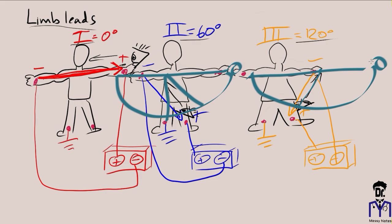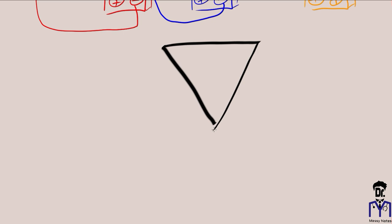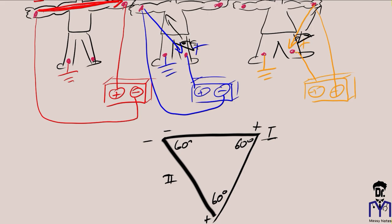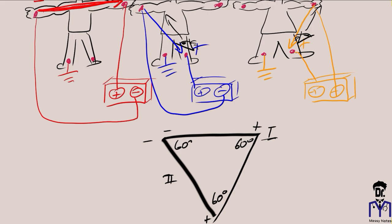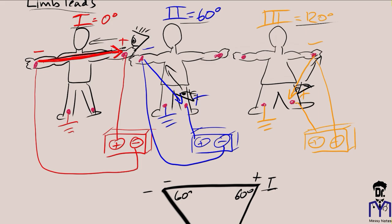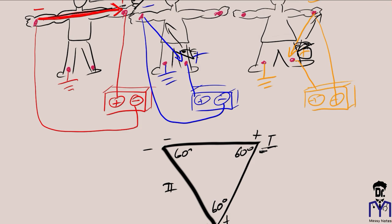If we combine all three leads, we form an equiangular triangle — also known as Einthoven's triangle. Because it's equiangular, each interior angle is 60 degrees. When we move these leads so they intersect through a common point while keeping their original orientation, we can see how they slice through the heart. Leads II and III look at the heart inferiorly, and Lead I looks at the heart laterally from the left side.